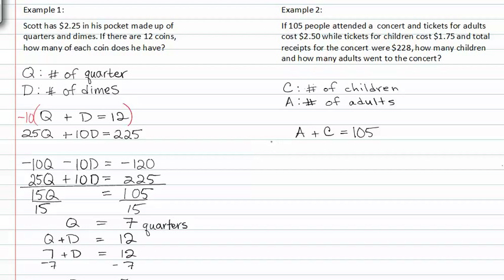We also know that if adults cost two dollars and fifty cents to get in, and there were a certain number of adults, plus we know that children cost one seventy-five times the number of children, this would give us the total value, or the total amount of money made at the concert on tickets, which was two hundred twenty-eight dollars.